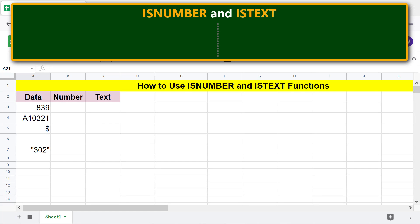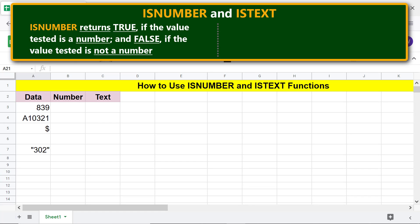ISNUMBER returns TRUE if the value tested is a number and FALSE if the value tested is not a number. ISTEXT returns TRUE if the value tested is text and FALSE if the value tested is not text.